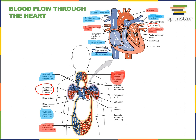The left atrium pumps blood down into the left ventricle, and the left ventricle pumps blood out into the aorta and into the arteries of the systemic circuit. The arteries of the systemic circuit have a relatively high oxygen concentration, the veins of the systemic circuit have a relatively low oxygen concentration, the arteries of the pulmonary circuit have a relatively low oxygen concentration, and the veins of the pulmonary circuit have a relatively high oxygen concentration.